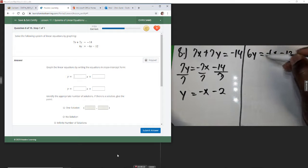Over here, x has already moved over. We just need to divide by 6, and that leaves us with y equals negative x minus 2.